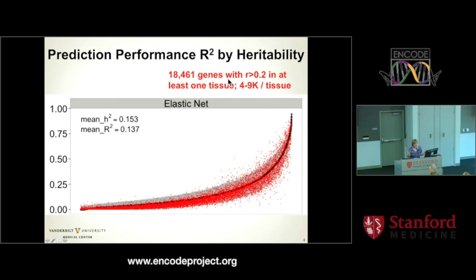We haven't yet used ENCODE annotations in this first pass through building the predictions — that's something people are looking at. The quality of prediction may improve as we include more information from ENCODE annotations. We've also only built cis predictors of gene expression at this point, but as GTEx matures with larger samples, we expect to be able to use at least the top-performing trans biology in the prediction equations.